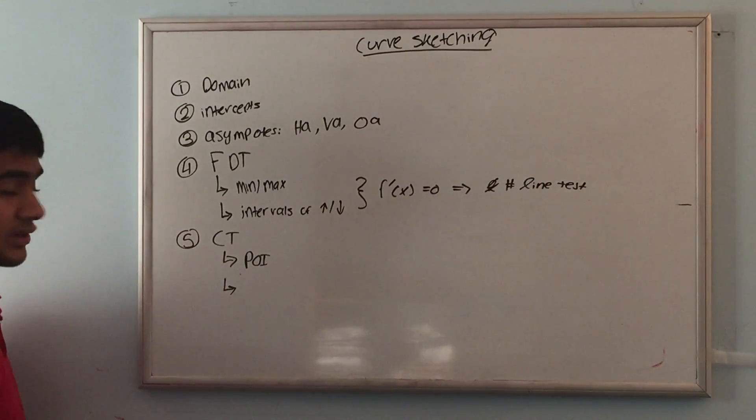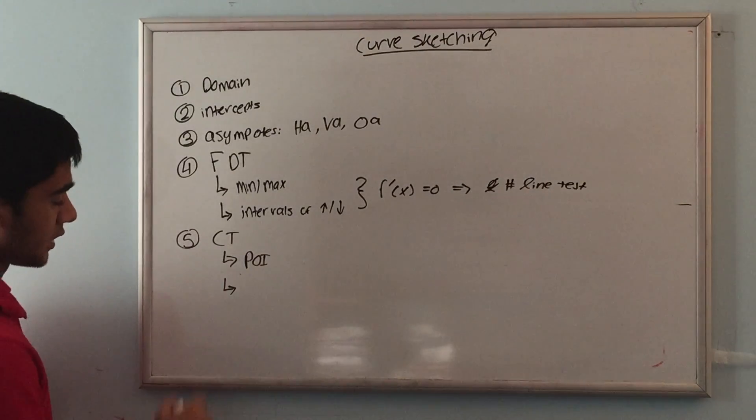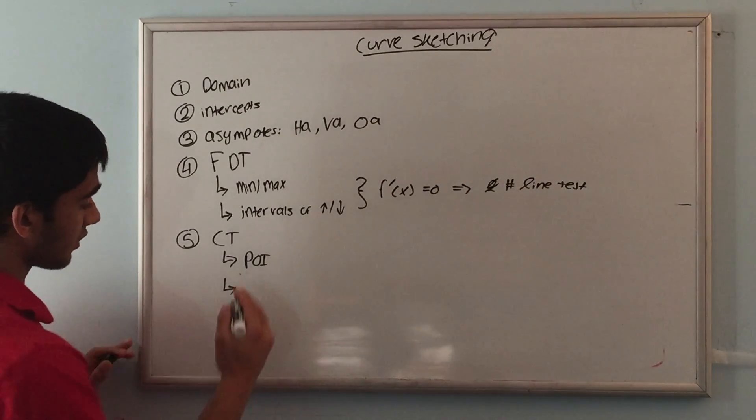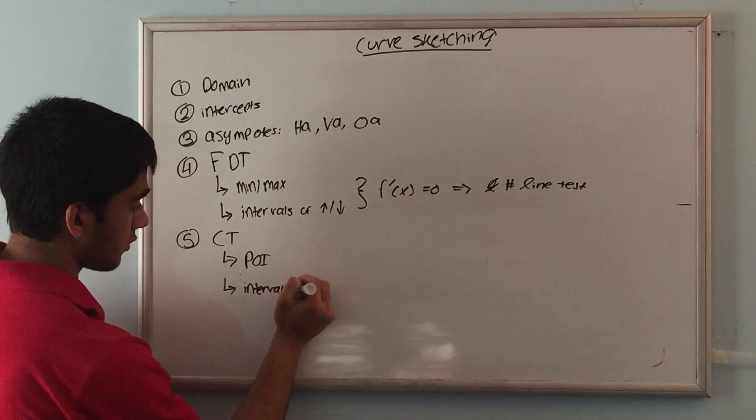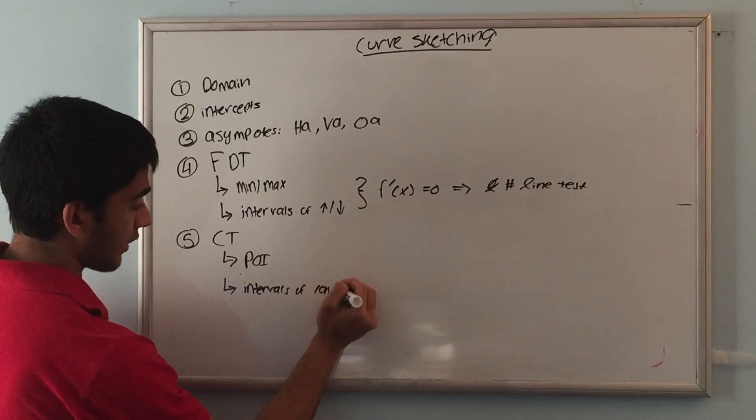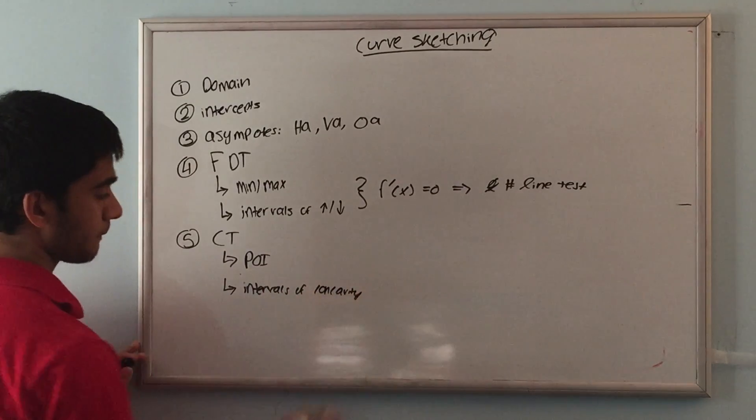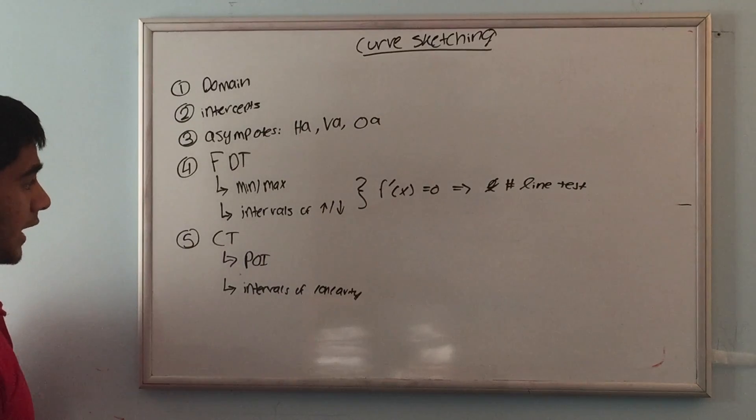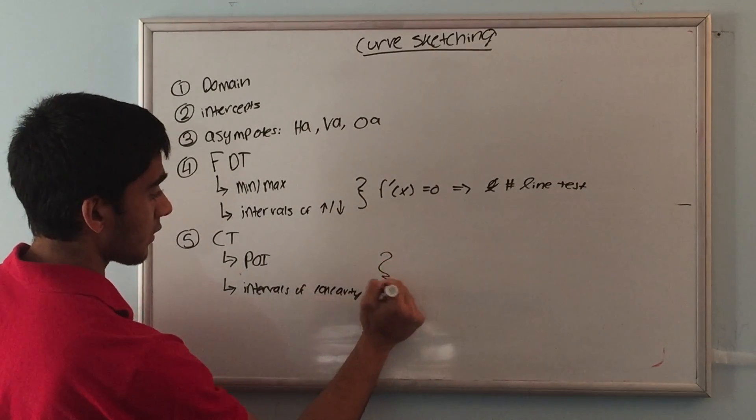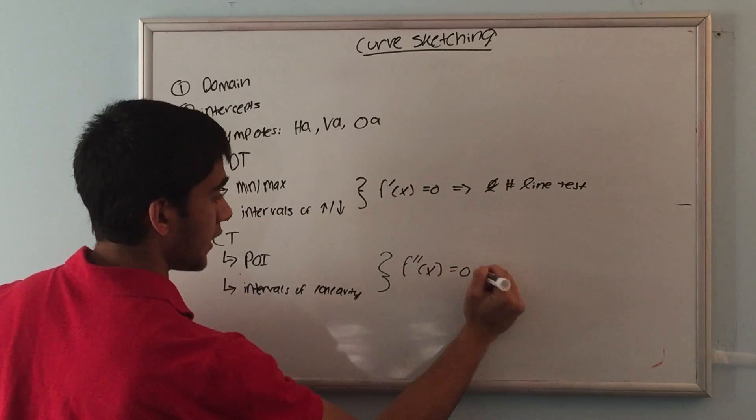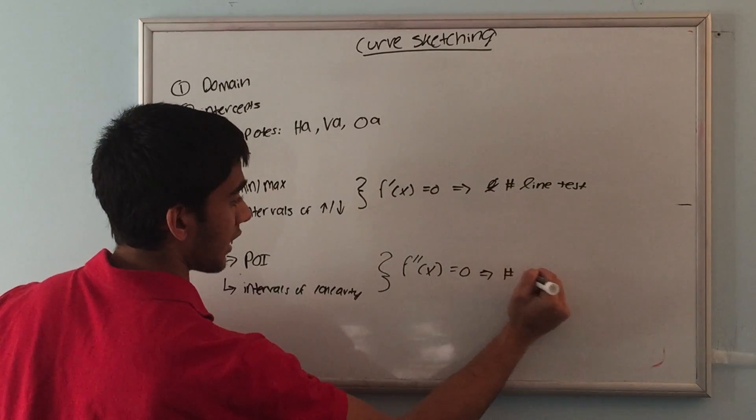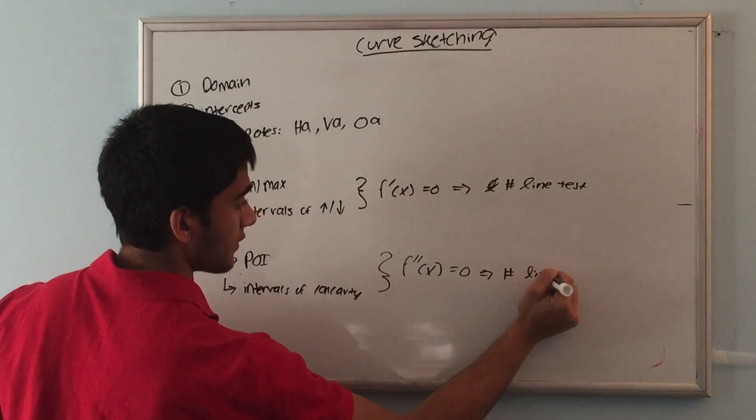We want to find the intervals of concavity. And we do this again by setting the second derivative of the function equal to zero and then again by using the number line test.